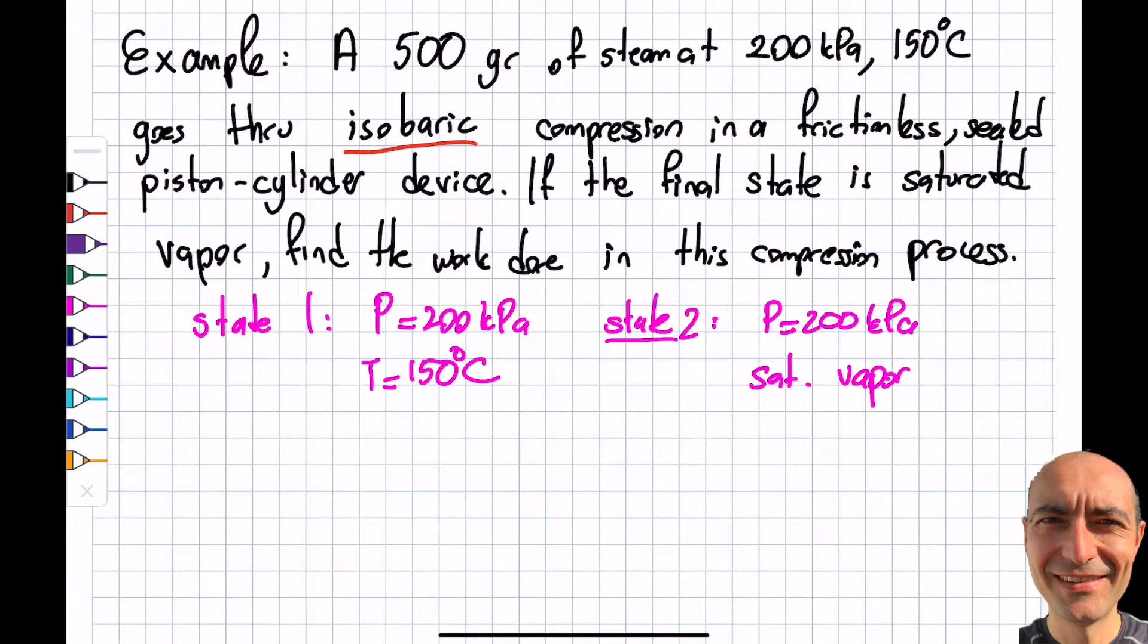As I mentioned in the previous question, what is the work done in this type of process? That is given to me as P times V2 minus V1. So P times delta V will give me the work done on the system or by the system.